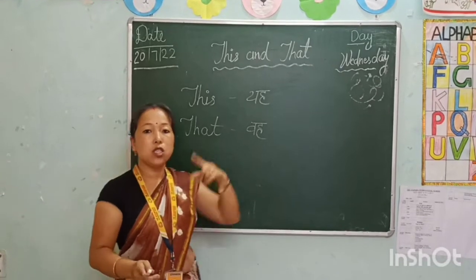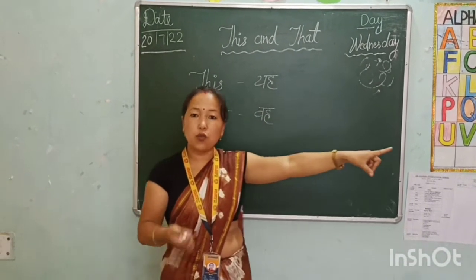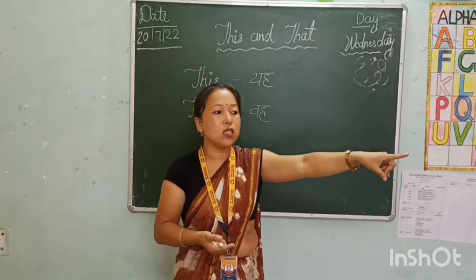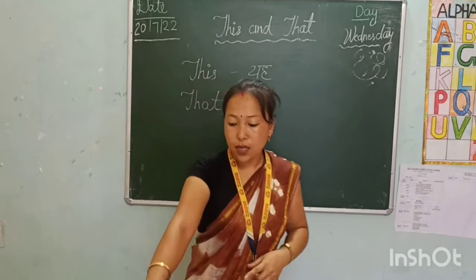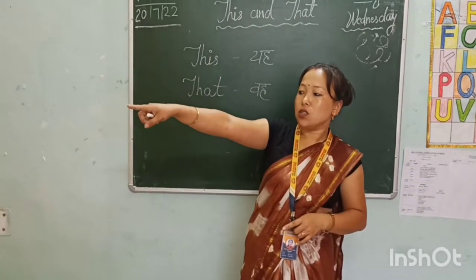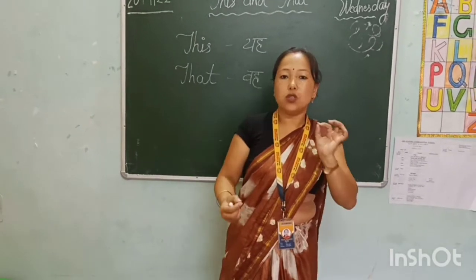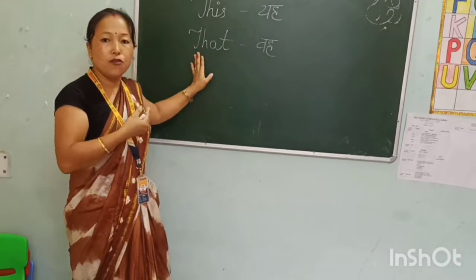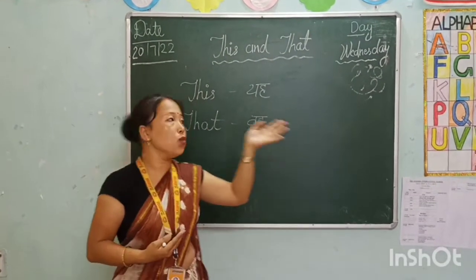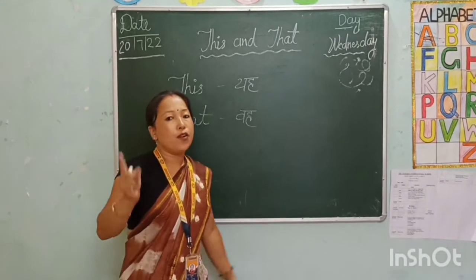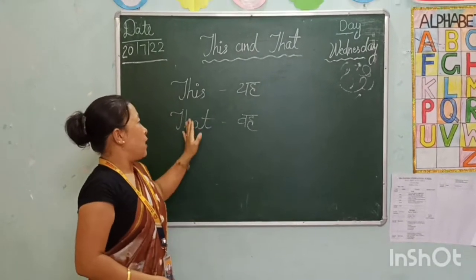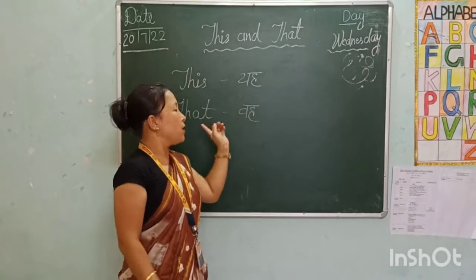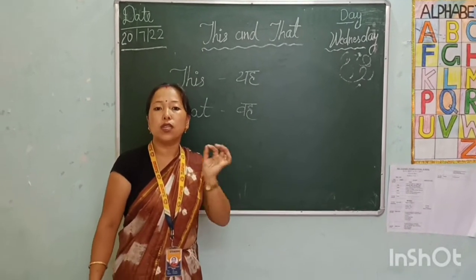And that — that means waha. We will use that. That is a pen. That is a book. That is a pencil box. We use this for near things and we use that for far things. Jo cheez hamare se door ho, uske liye ham that ka use karenge. And remember one thing more, children: this and that are used for only singular things.